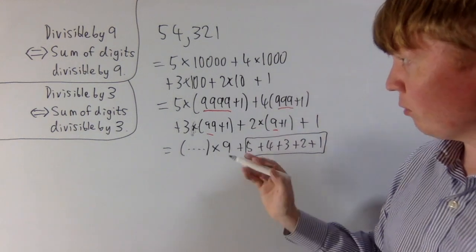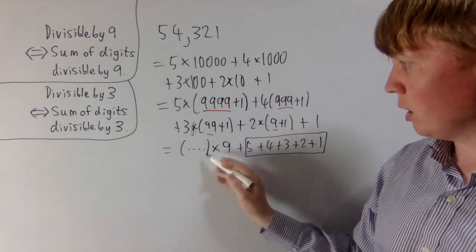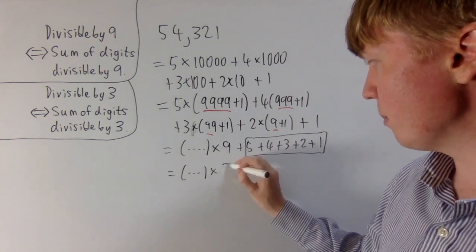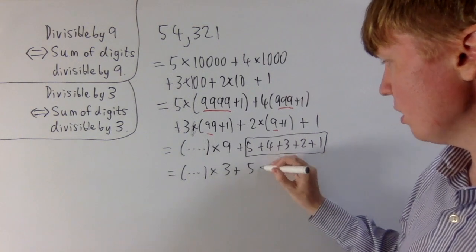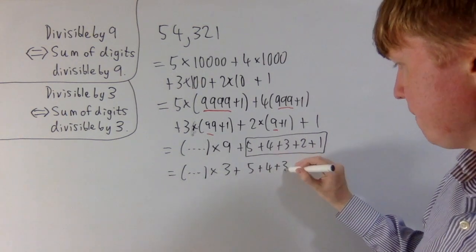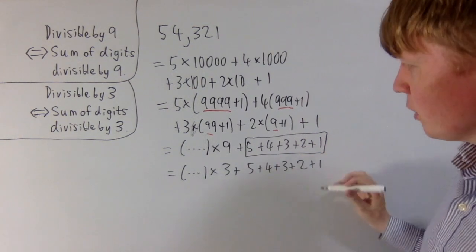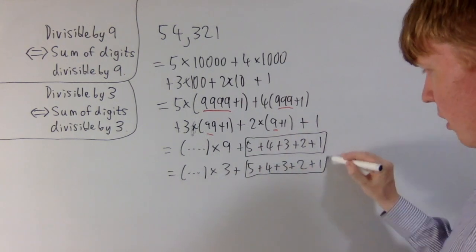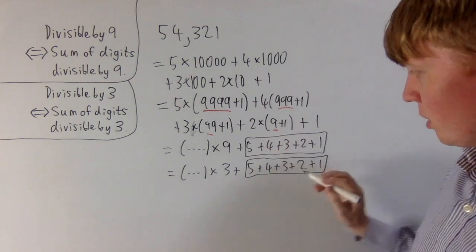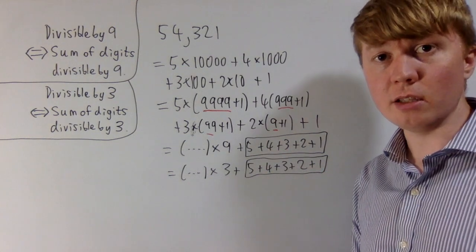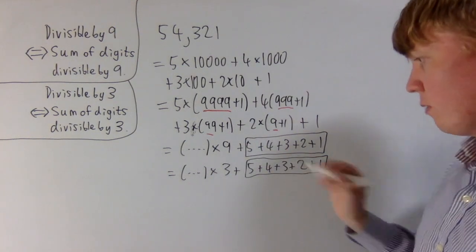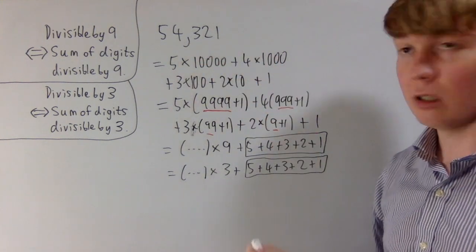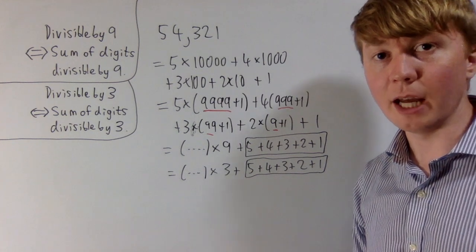For divisibility by 3, because we've got an integer times 9, we can write this as triple that integer times 3, plus the sum of digits once again. To check divisibility by 3, we've got an integer times 3, so we're only interested in the remaining piece — the sum of our digits. Is 15 divisible by 3? Yes, it is. So that tells us that 54,321 is divisible by 3, but not by 9.